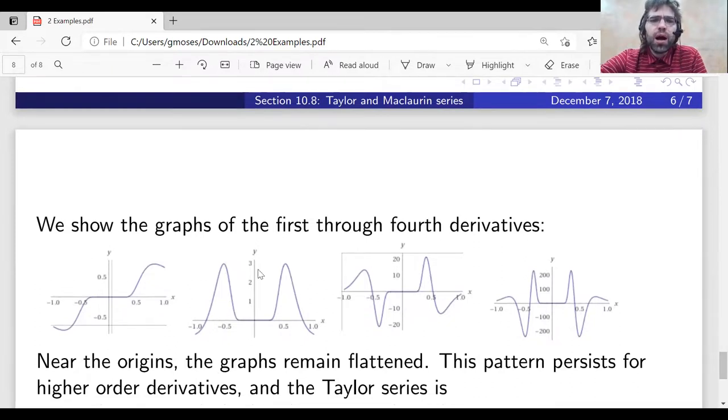Notice the y axis here. When we're looking at the first derivative, y is between negative 0.5 and 0.5. The second derivative, we go up to three. The third derivative, we go up to around 20. The fourth derivative, we go up to around 200. And we'll see that the derivatives growing fast quickly is related to the fact that the function is not equal to its Taylor series.